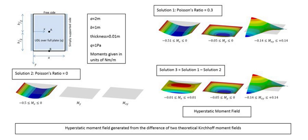The abscissa σ_n and ordinate τ_n of each point on Mohr's circle are the normal stress and shear stress components, respectively, acting on a particular cut plane with a unit vector n with components (n₁, n₂, n₃).